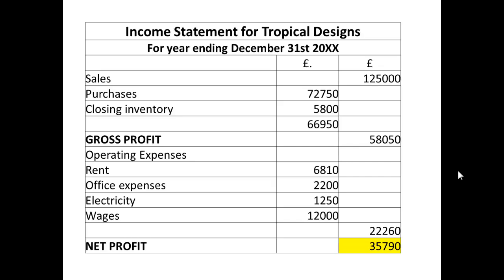So we're going to take the business of Tropical Designs, and the first thing we're going to look at is the income statement. We can see that the figure here, which has been highlighted — the figure that we want for net profit — is £35,790.